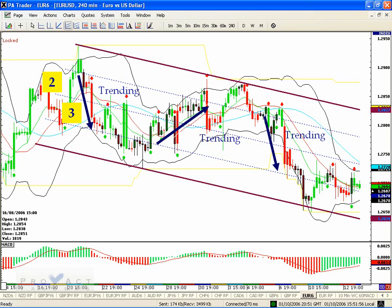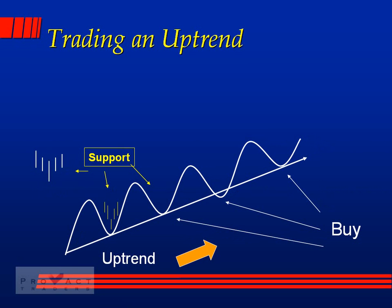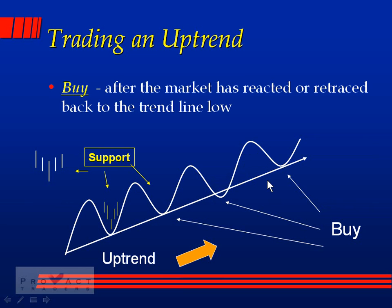How do we trade an uptrend? First you need one, two, three support points. Once you have three supports, you buy. When you get to the top of the trend wall, you sell your position and wait until it comes back down to the bottom of the trend wall, then buy again and ride it to the top. Do that as long as the market allows. You buy after the market has retraced back to the trend line low.